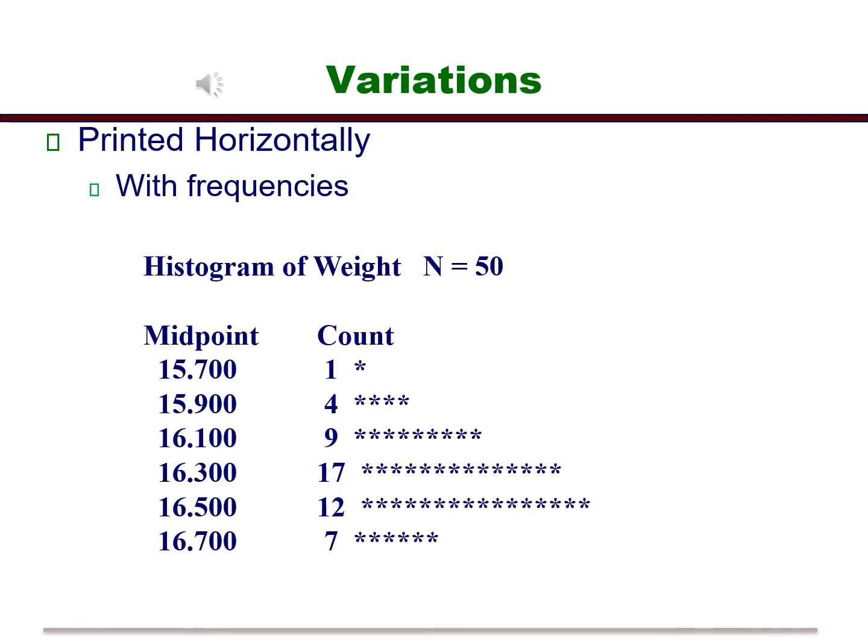There are variations to the histograms, like you can show the histogram horizontally, or use characters instead of the typical graphs. This version is usually called a stem and leaf plot.